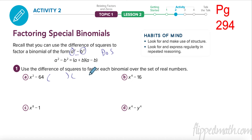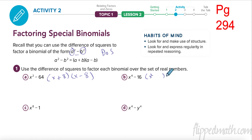The square root of the front goes in the front, the square root of the back goes in the back — one's plus, one's minus. Over here we have the square root of the front is x squared, and the square root of the back is 4, not 16 — it's 4.